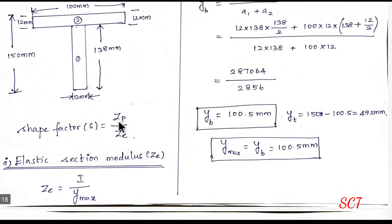We know the shape factor formula is ZP by ZE. Plastic section modulus divided by elastic section modulus. First elastic section modulus.